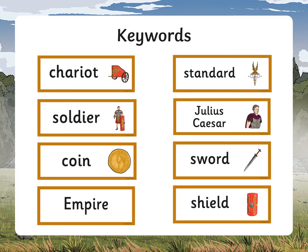Before we go any further, just a few key words I want to highlight that might help today. We've got chariot, soldier, coin, empire, standard, Julius Caesar, sword and shield. The pictures give you a bit of a clue there with some of them. The only one that doesn't have a picture is empire, which was the lands that the Romans controlled. That's why it's called the Roman empire. You may have heard of the British empire as well — the land, the territories that Britain controlled.